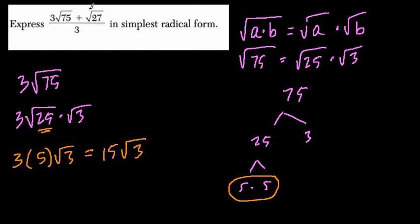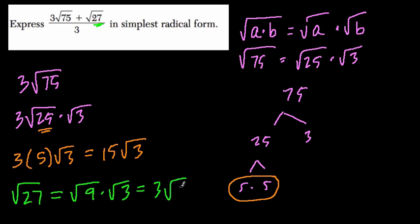Now the next one we can look at is right here, radical 27. Well, that's equal to what? Well, that's equal to radical 9 times radical 3. And that equals what? Well, radical 9 is 3 times the square root of 3.